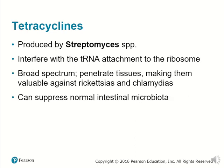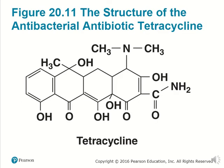Tetracyclines are produced by Streptomyces. They interfere with tRNA — transfer RNA — attachment to ribosomes. tRNA needs to attach to ribosomes because tRNA brings different amino acids to the ribosome, where the ribosome can then link those amino acids into long proteins. They're broad-spectrum and penetrate tissues, making them valuable against rickettsias and chlamydias which can go deep into the body. Unfortunately, they can suppress normal intestinal microbiota. The structure of typical tetracyclines contains four ring structures in their chemical compound.